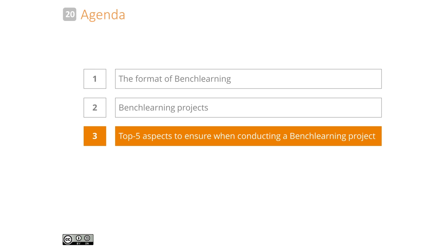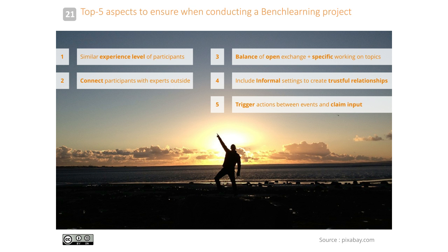The top five aspects to ensure when conducting a bench learning project in any domain: First, choose companies or participants with a similar experience level for the subject matter, to ensure a mutual exchange of knowledge — if you have a beginner and an expert it becomes unbalanced and participants may complain. Second, connect participants with experts outside the project boundary — use your network to invite external experts to offline events, giving new perspectives, insights, and different angles on the topic.